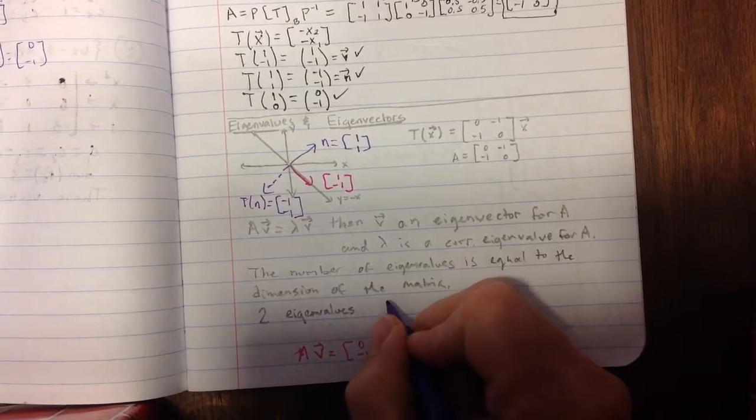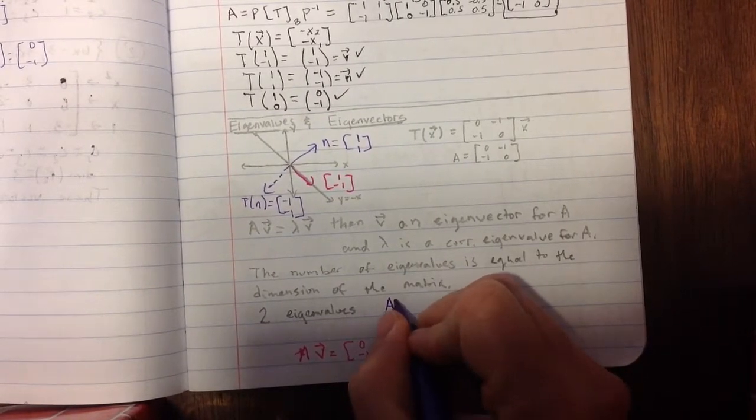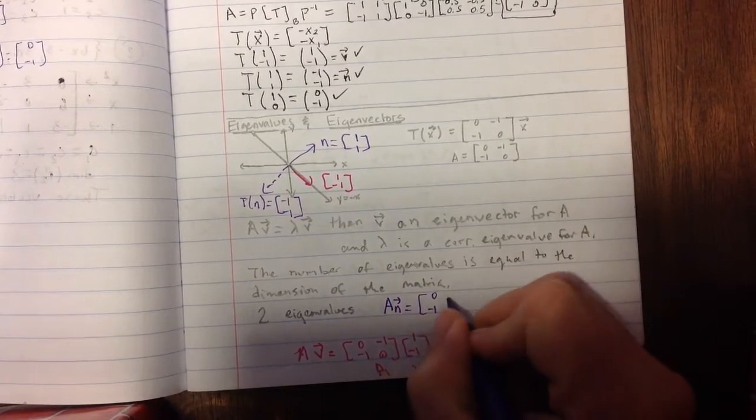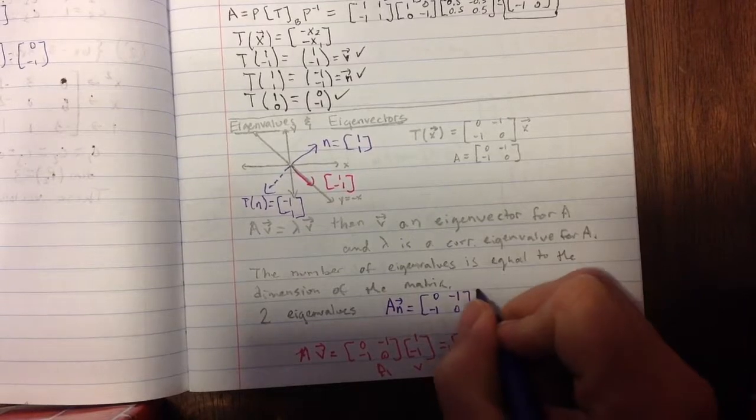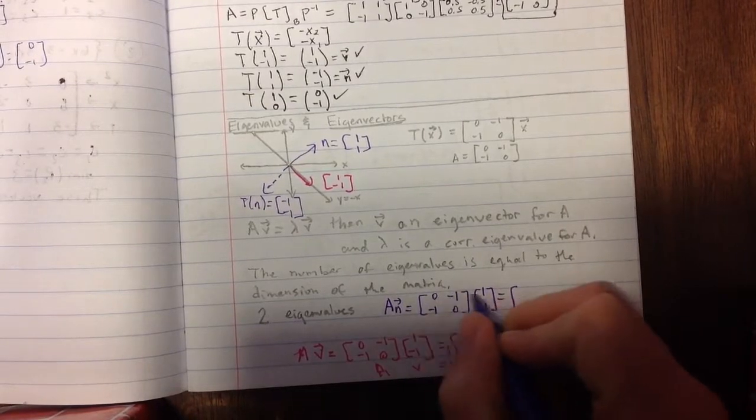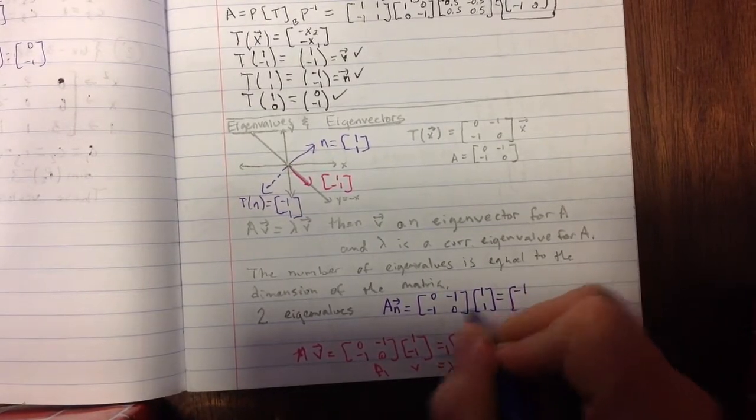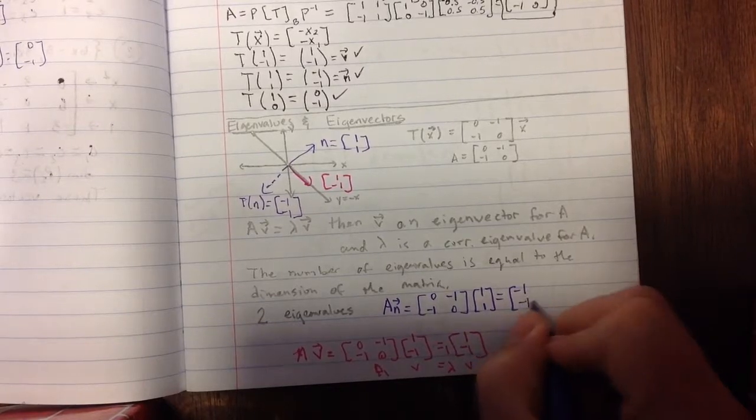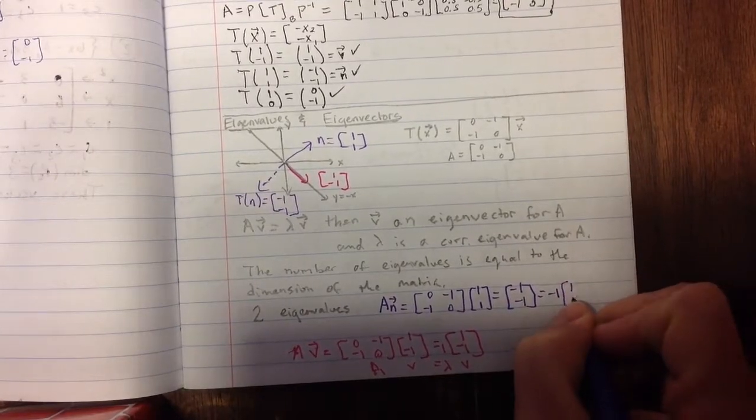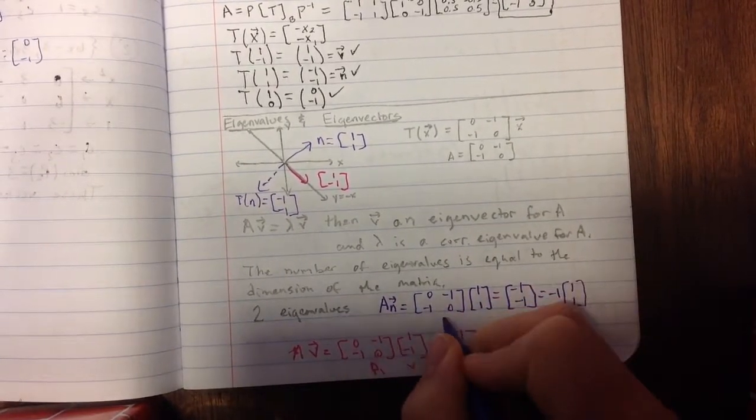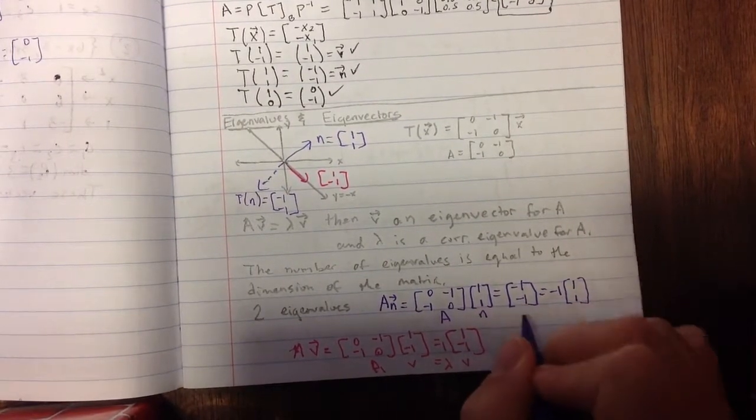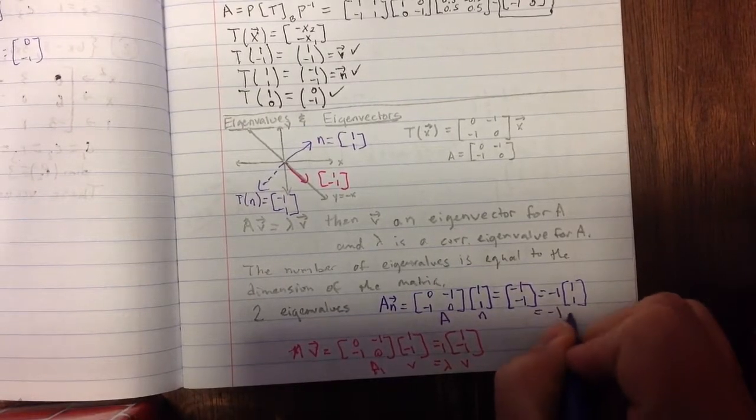So if I take A times n, the normal vector, I get [0, -1; -1, 0] times [1, 1], and that will give me this times this, -1, this times that, -1, which is equal to -1 times the original vector I plugged in. So you can see that in this case, A times n is equal to -1 times n.